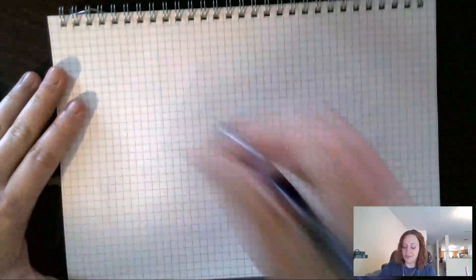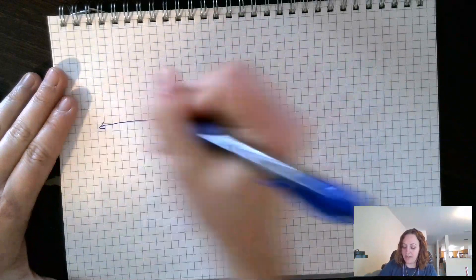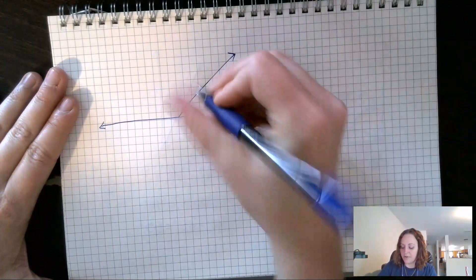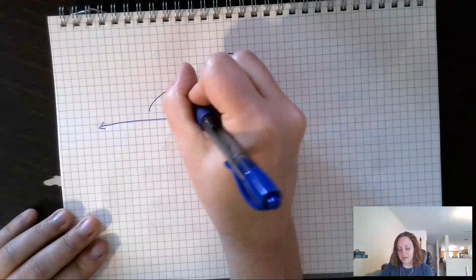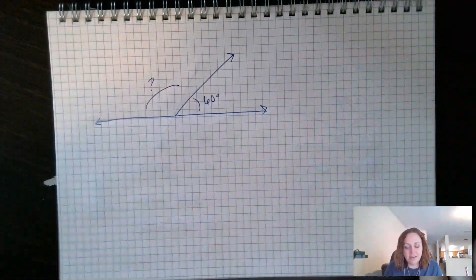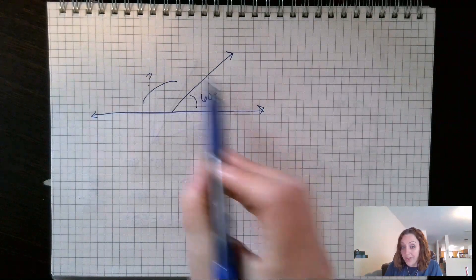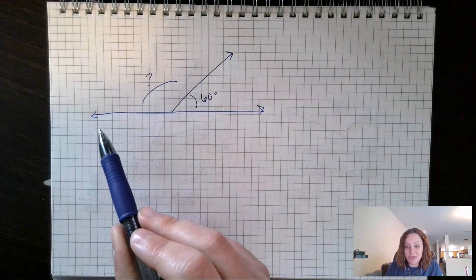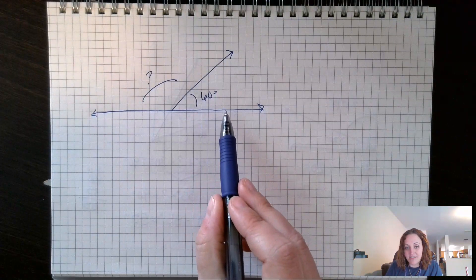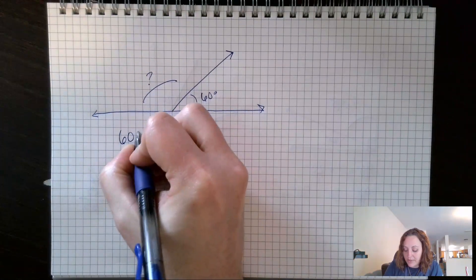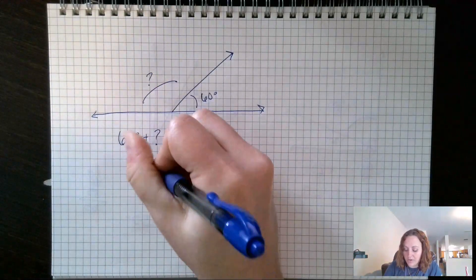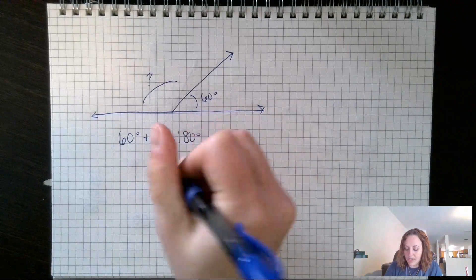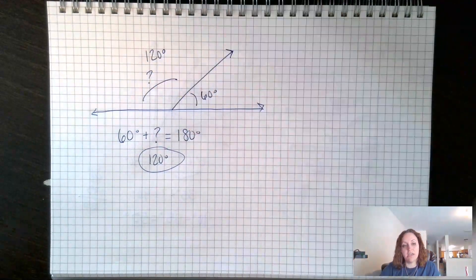Let's look at another example using a straight angle. If I have a straight angle and I know that this part is 60 degrees, what is the other part? The whole straight angle is 180 degrees. 60 plus what equals 180? 60 plus 120 equals 180, so my unknown angle is 120 degrees.